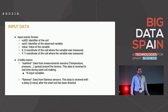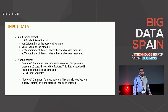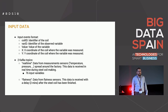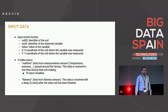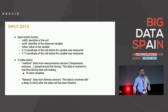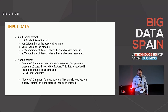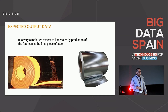We receive the data in two Kafka topics. One topic contains the sensor measurement information, and the other contains the flatness measurements at the end — with a delay relative to the real-time sensor measurements.